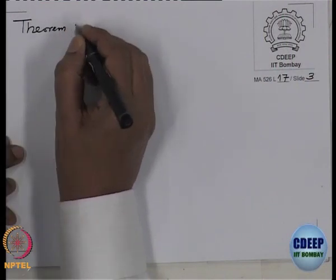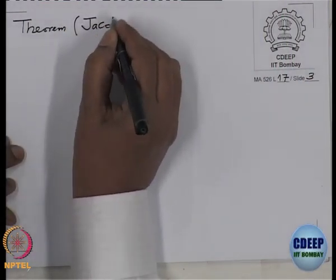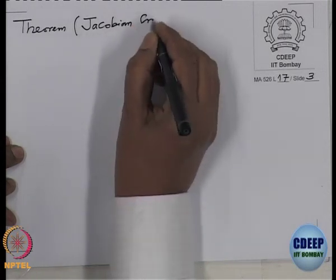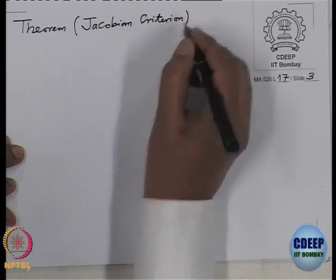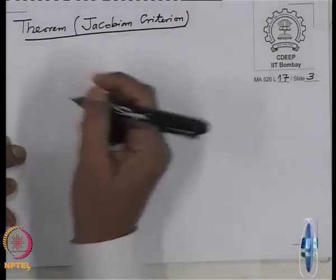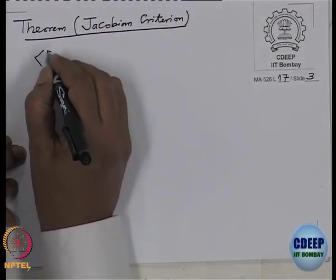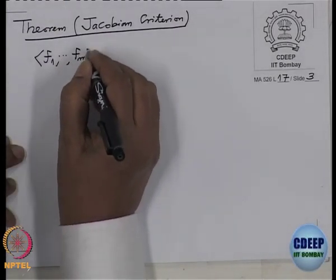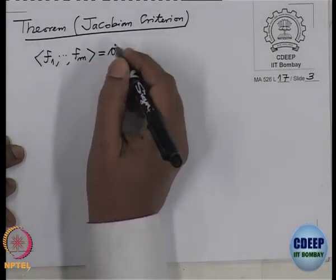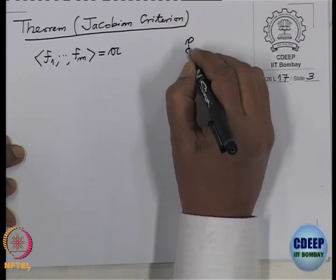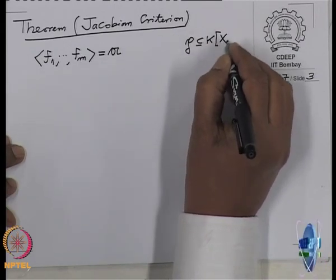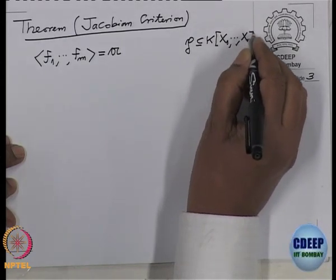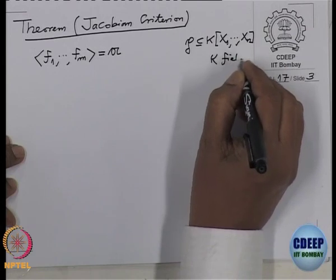To be more precise, let us state what we want to prove. The theorem we want to prove is called the Jacobian Criterion because it involves the Jacobian matrix. As in the earlier notation, F1 to Fm are the generators for the given ideal A. We have a prime ideal P — everything is happening in the polynomial ring in n variables over a field K.